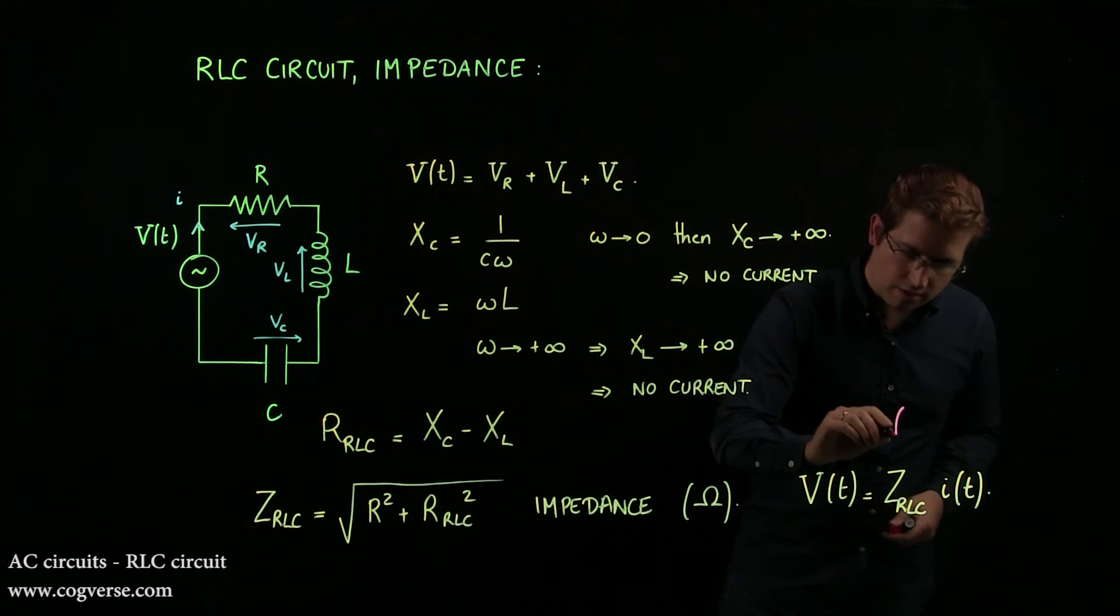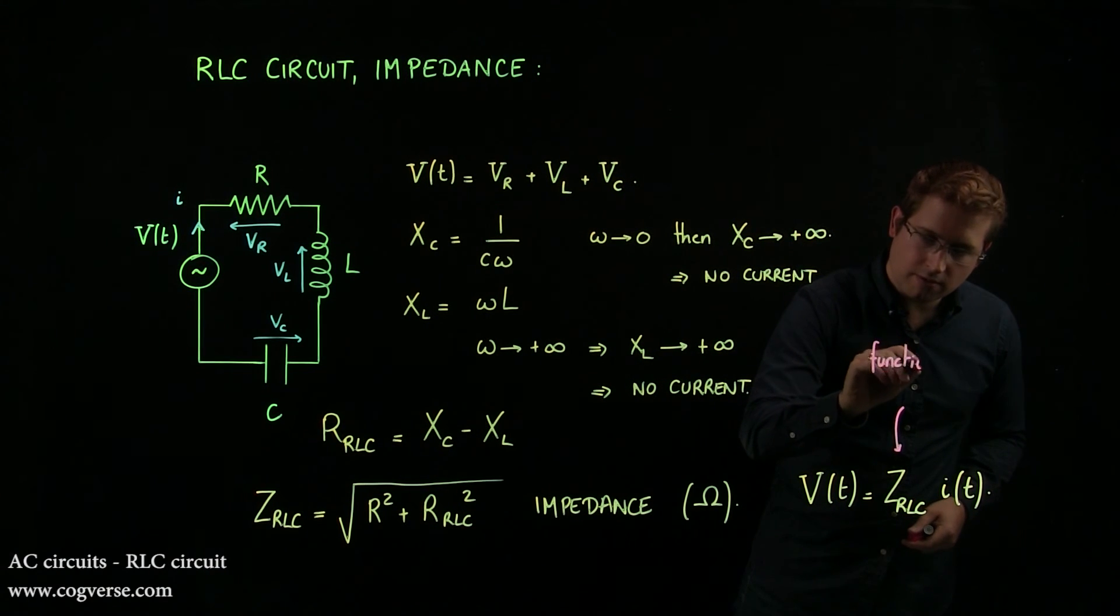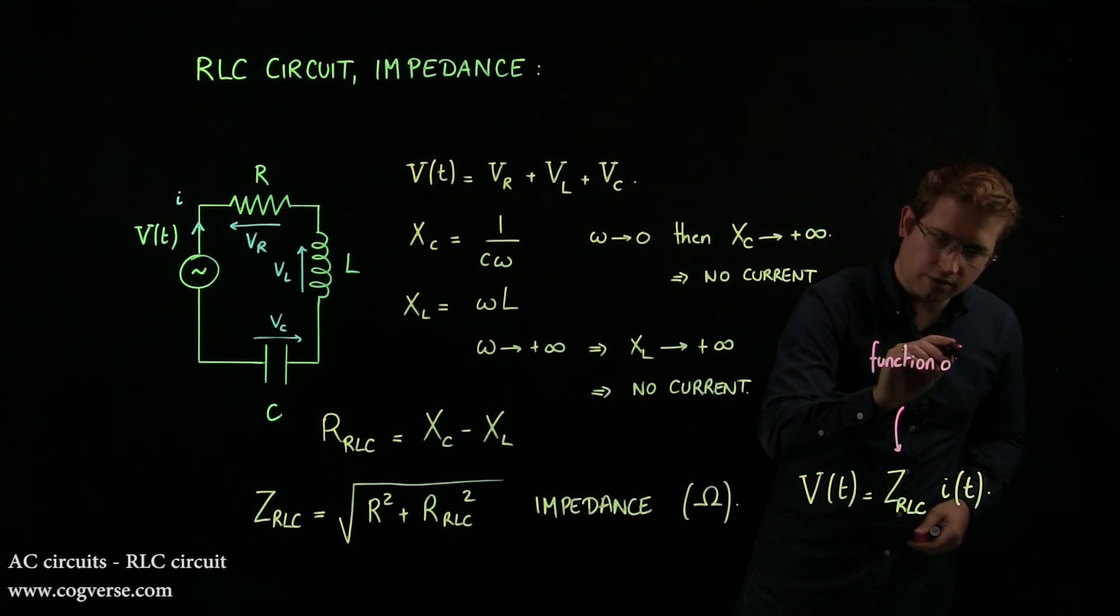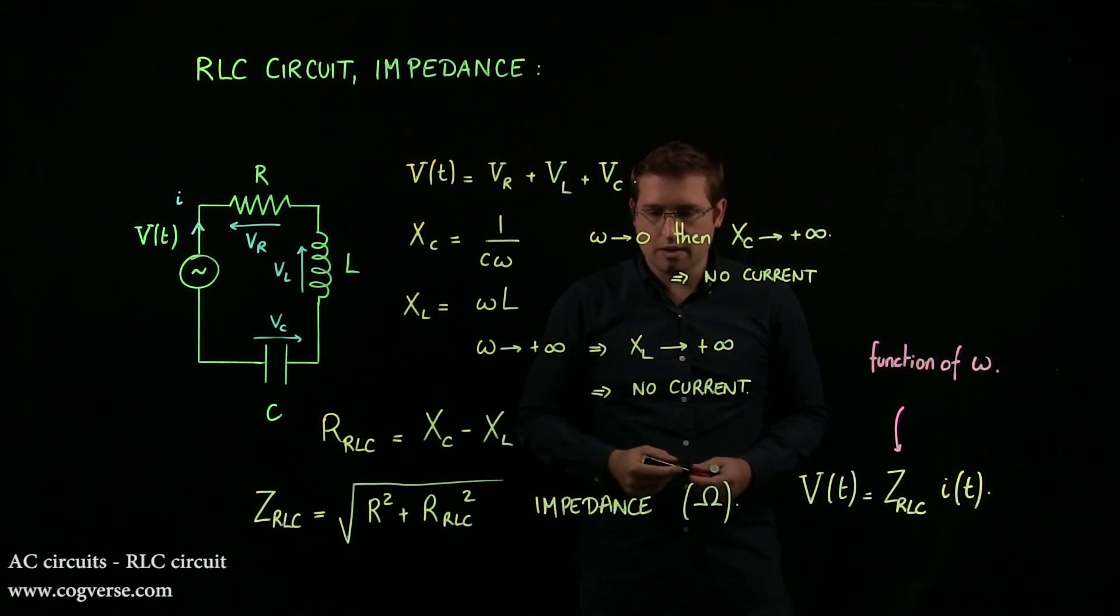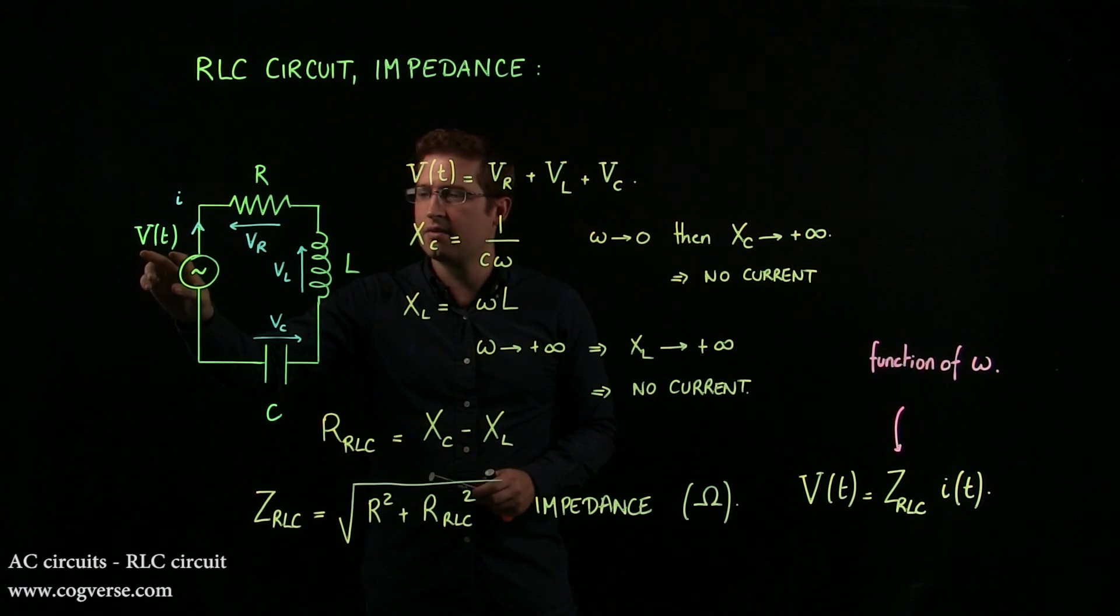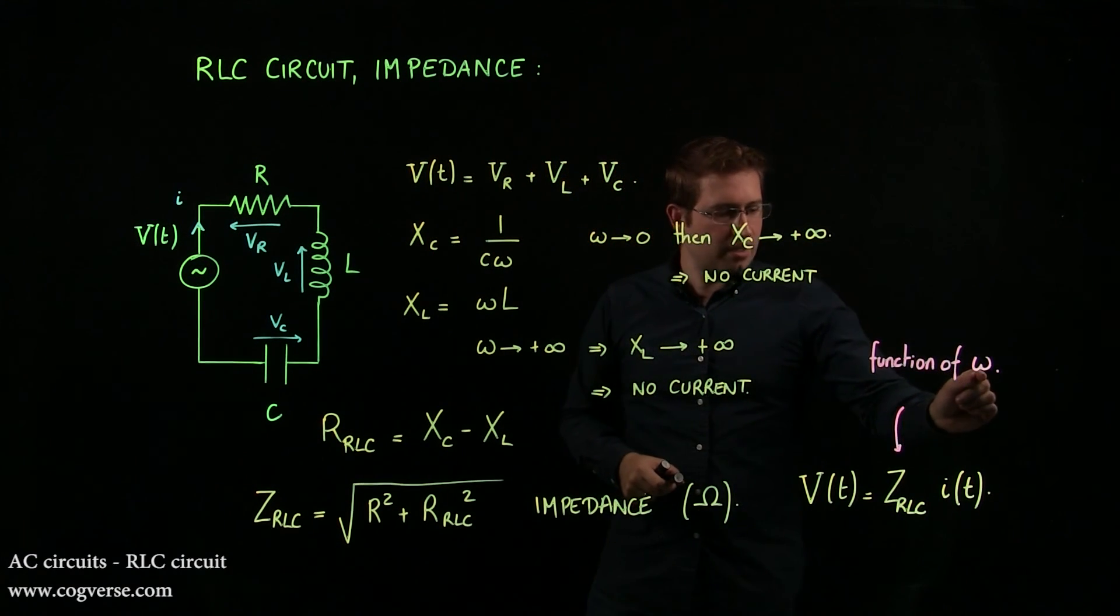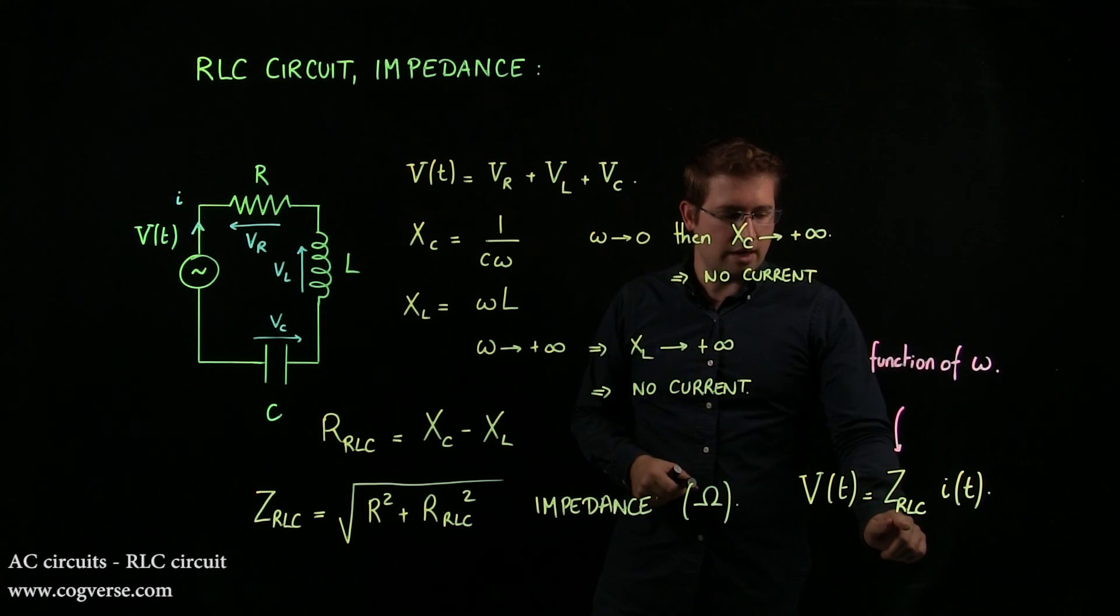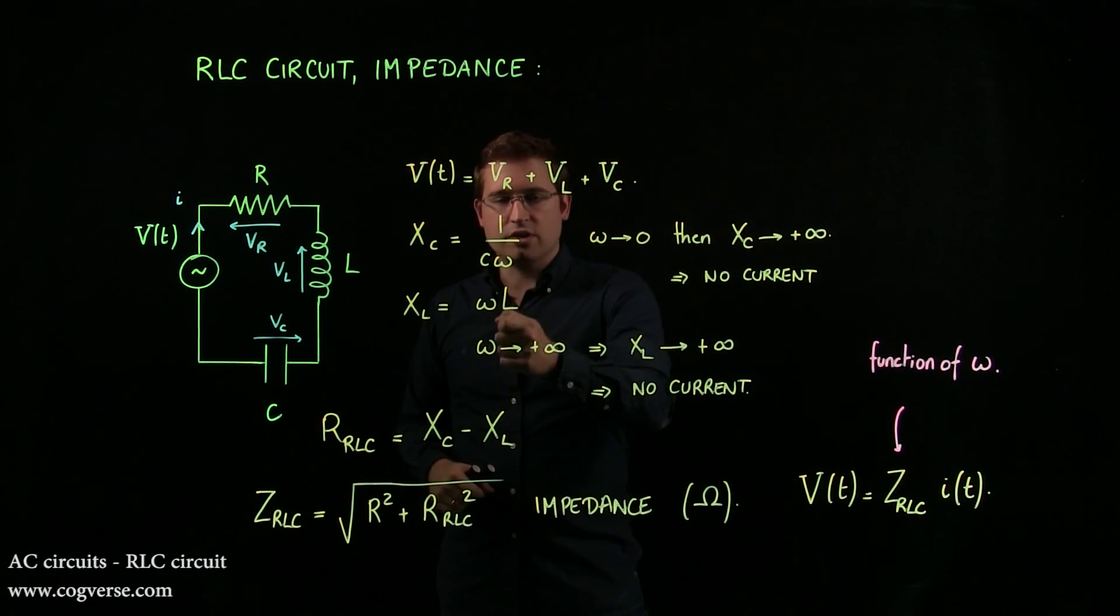So this we'll come back to the fact that Z here is a function of the angular frequency omega that drives the AC generator. So if we have V naught sine omega T for V of T, for example, omega tells you what ZRLC is, because Xc and XL are functions of omega.